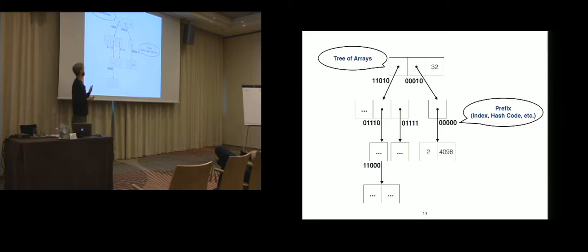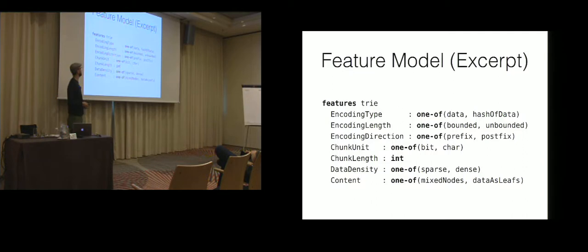So, for tries, we then did a domain analysis. And we looked at all the different, or most popular implementations for variants of collection data structures implemented in tries. And as a result, we also came up with a feature model describing, actually, implementation choices you have for these trie data structures and for the optimizations within, but also for encoding different data type semantics.